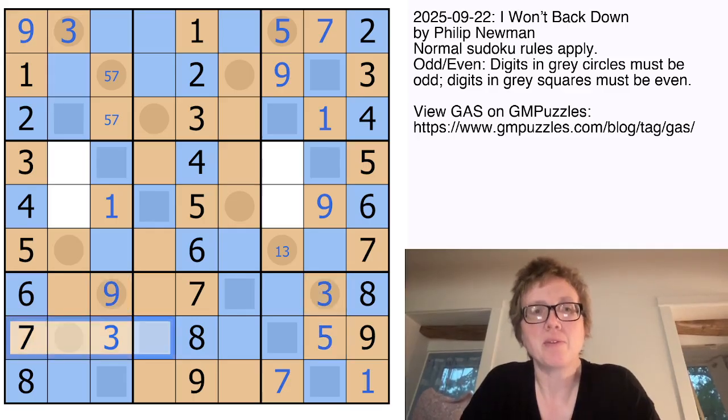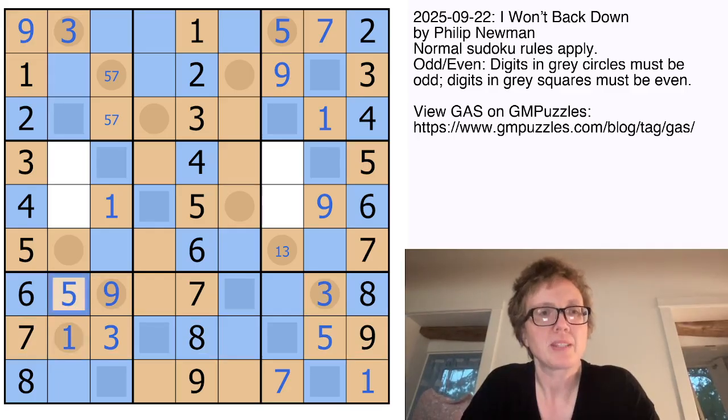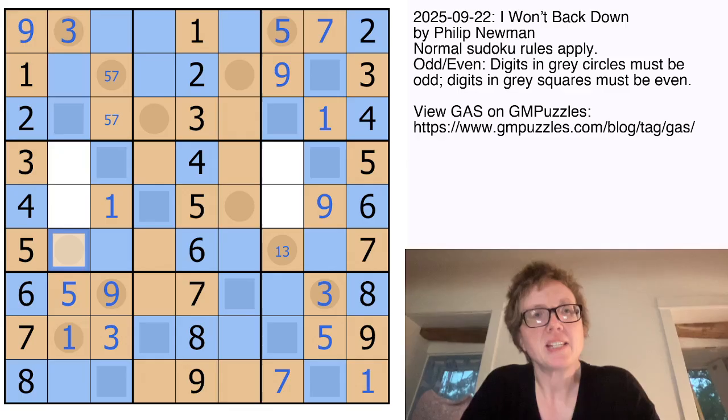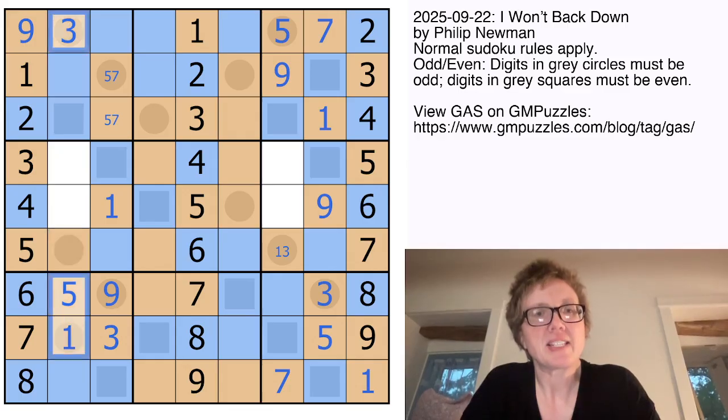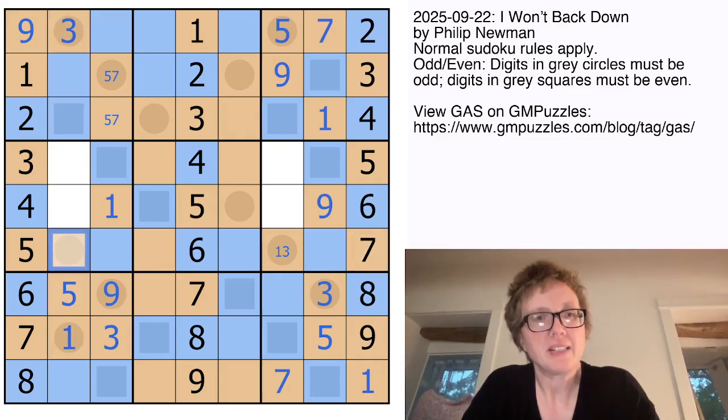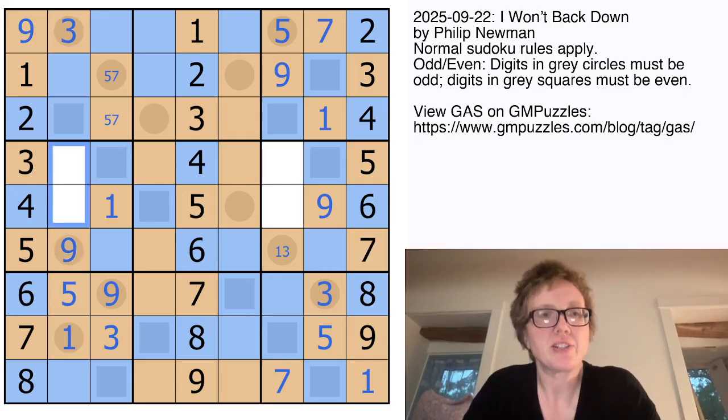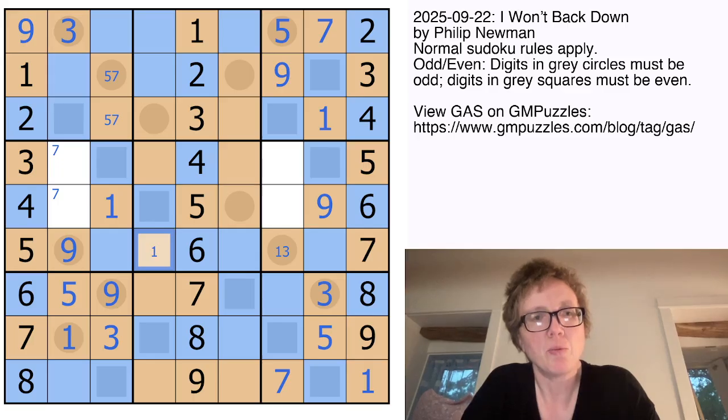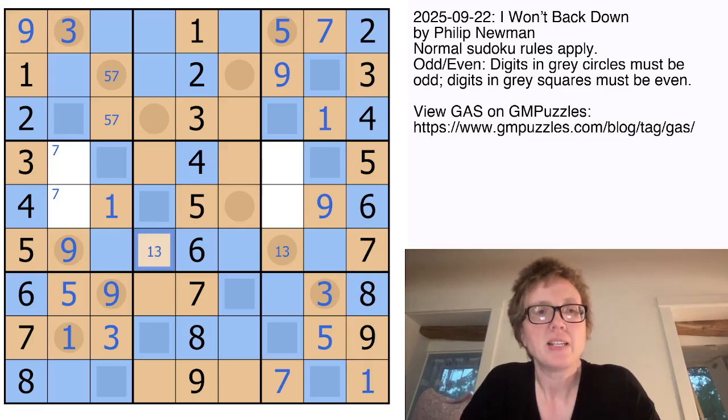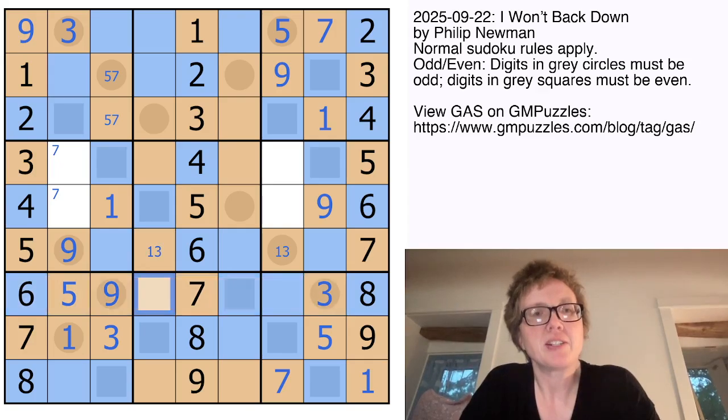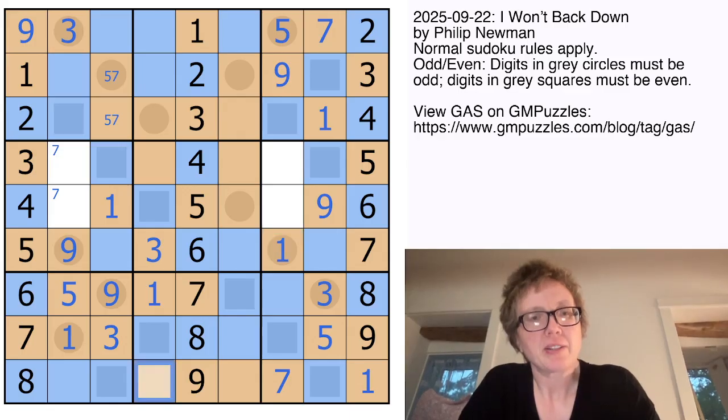And now we have all but one of our odd digits in row eight. That makes this a one. Now this sees one, three, five, and seven, so it becomes a nine. And we know that our last odd digit here is a seven. This is going to be either a one or a three. In row seven, our last odd digit is a one, and that resolves this. And we need a three and a five here. There's a three already in column four, so that's going to be a five with a three right there.